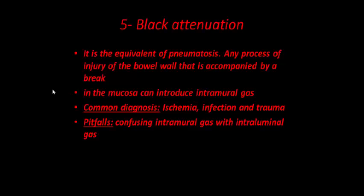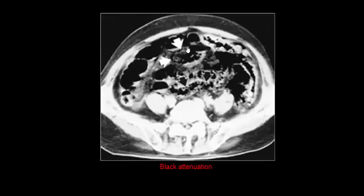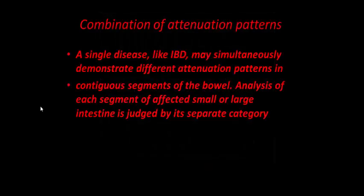Black attenuation is the equivalent of pneumatosis. Any process of injury to the bowel accompanied by a break in the mucosa can introduce intramural gas. Common diagnoses are ischemia, infection, and trauma. A pitfall is confusing intramural gas with intraluminal gas. Examples show black attenuation as a result of air in the wall — intramural air — and this is the last type of attenuation pattern in CT contrast-enhanced investigation of bowel.